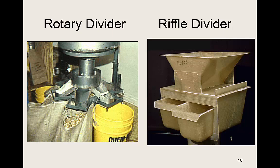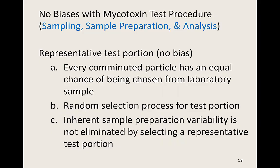Once the aggregate sample is formed, a good method for dividing it to get your laboratory sample would be a rotary type divider, or if the aggregate sample is small, a simple riffle divider could be used. Once your laboratory sample has been collected and comminuted, you must select a representative test portion from that ground laboratory sample. To do that, every comminuted particle needs to have an equal chance of being chosen. The selection process should be random, and even if a representative test portion is selected, the inherent sample preparation variability is not eliminated.